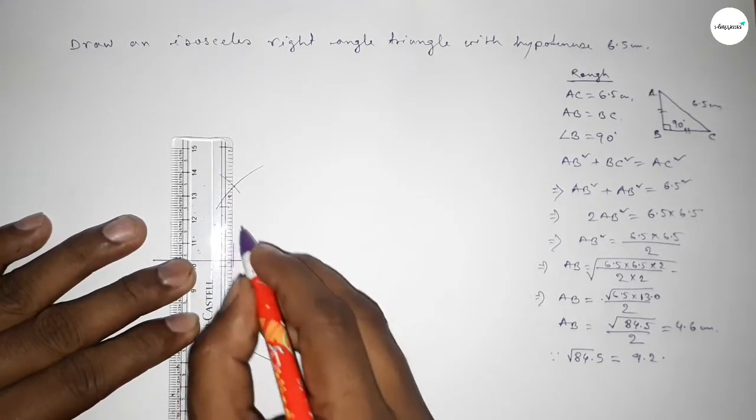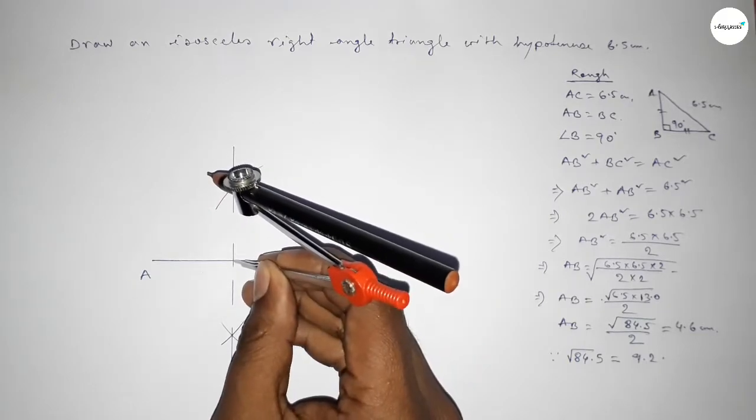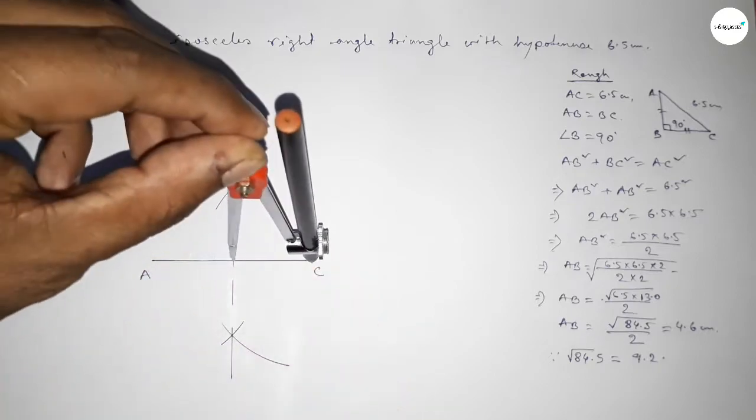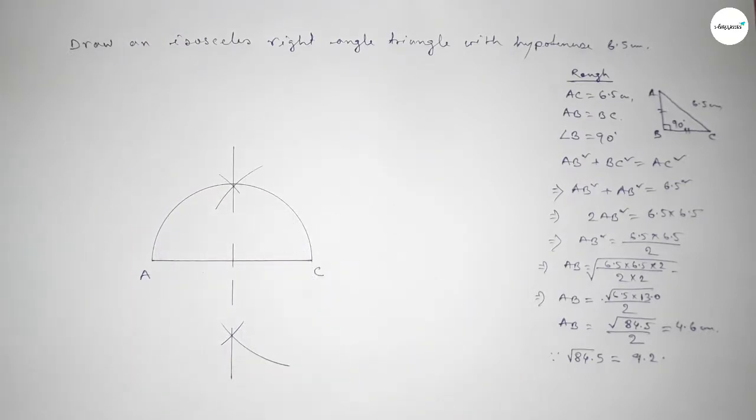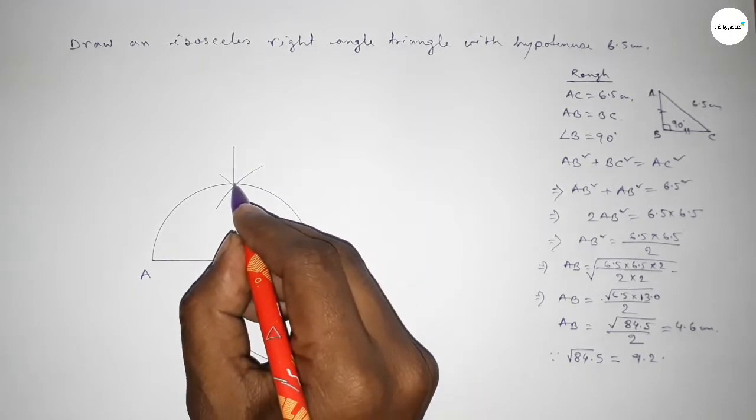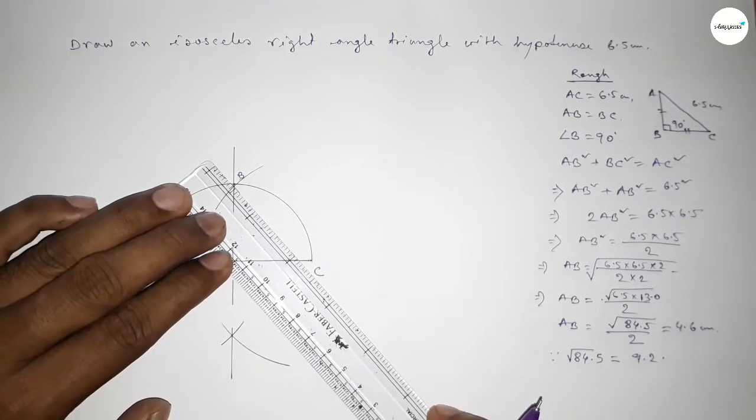Now joining this bisector. Next, taking the putting the compass here and taking the distance OA and OC to draw a semicircle. And semicircle and the bisector meet at point B. Now first joining C and B.